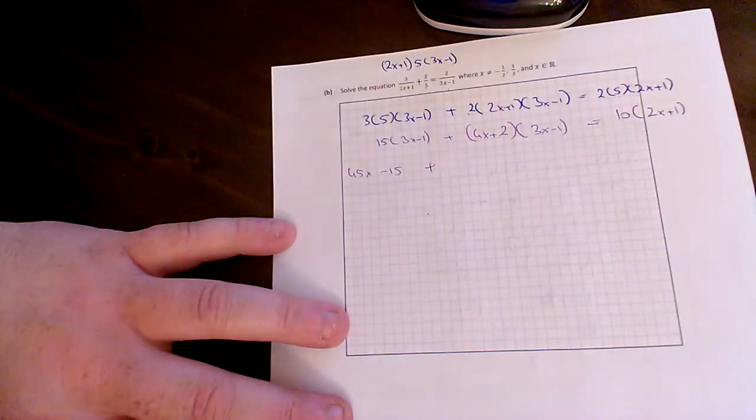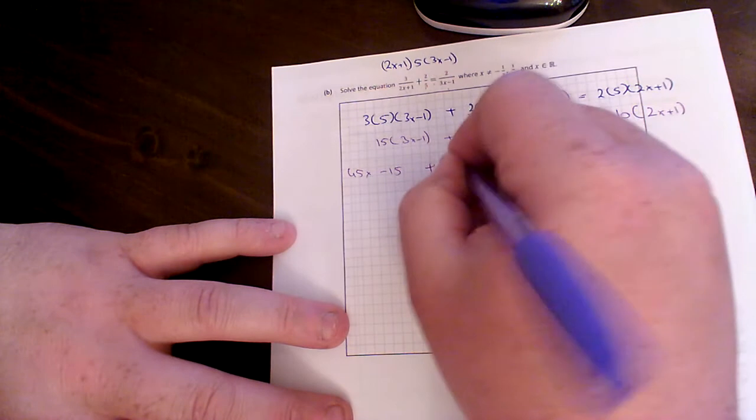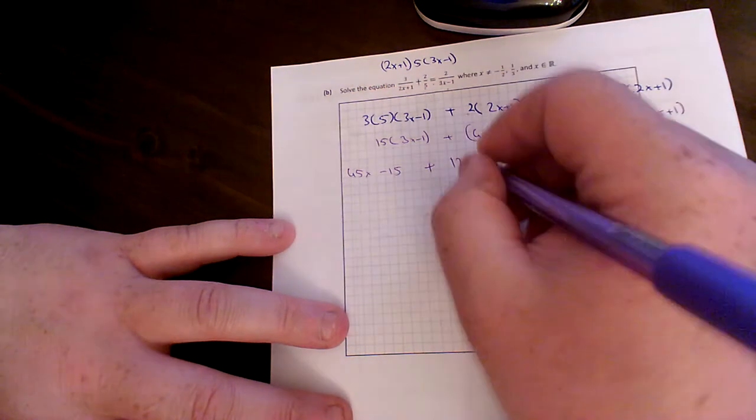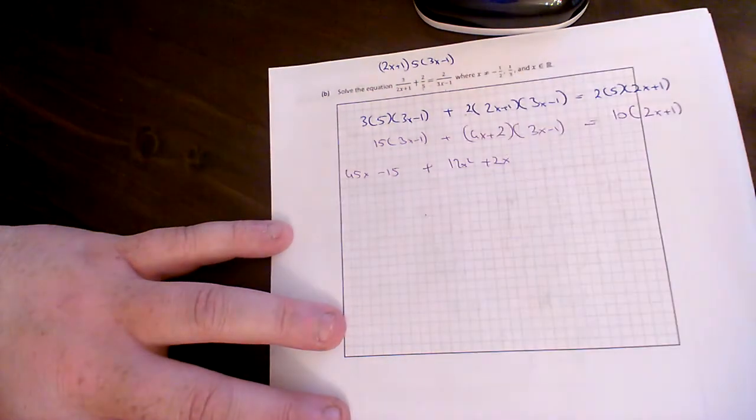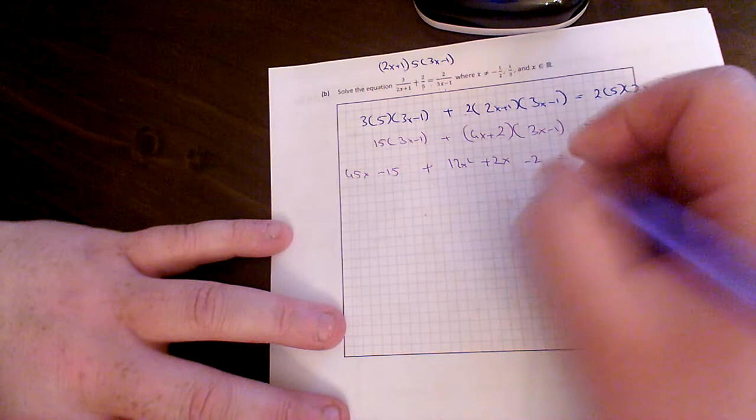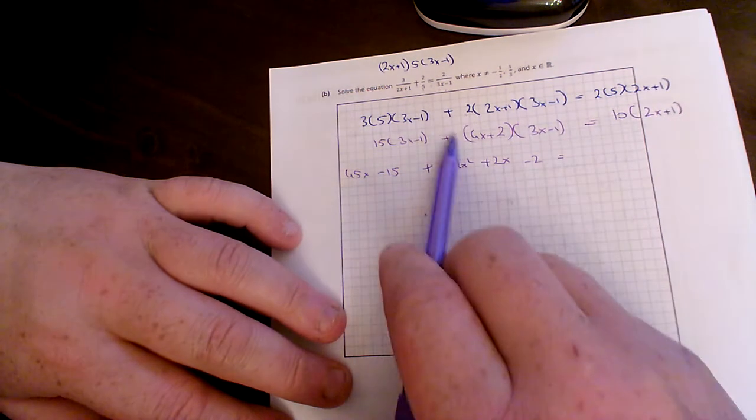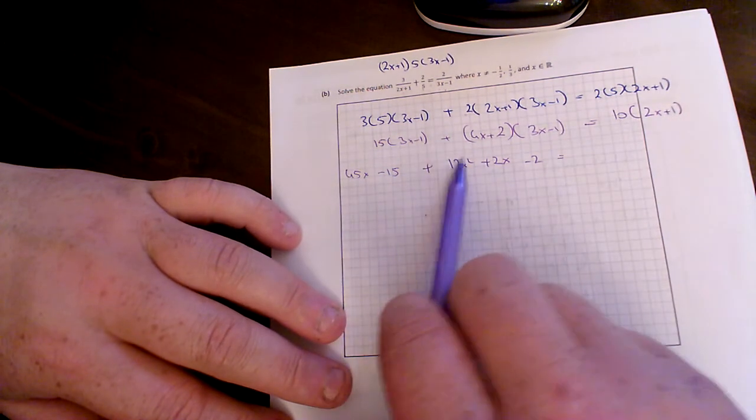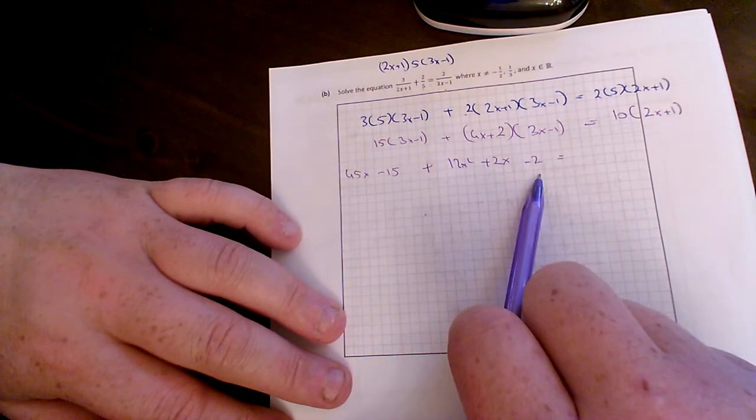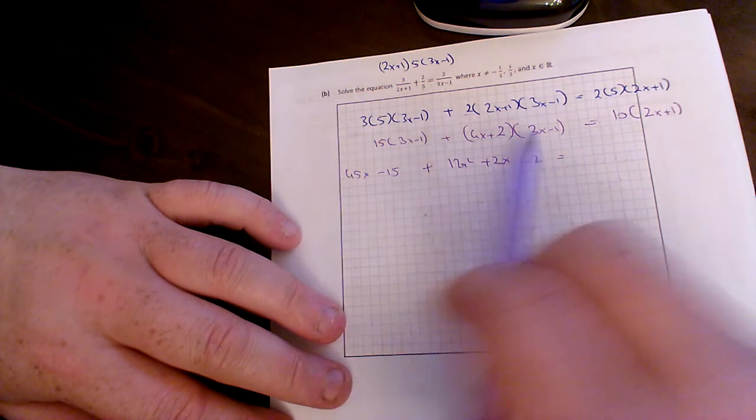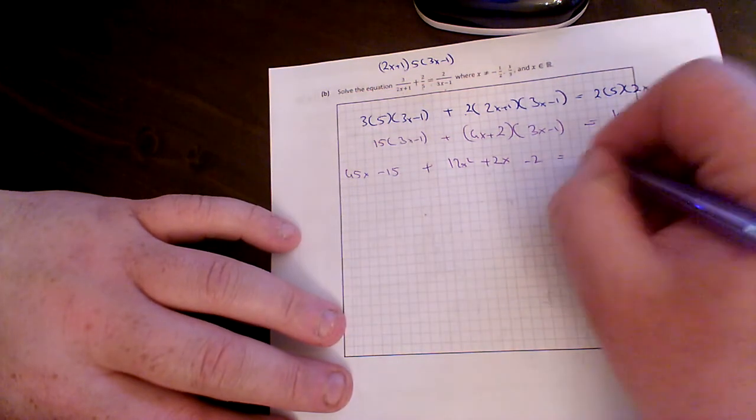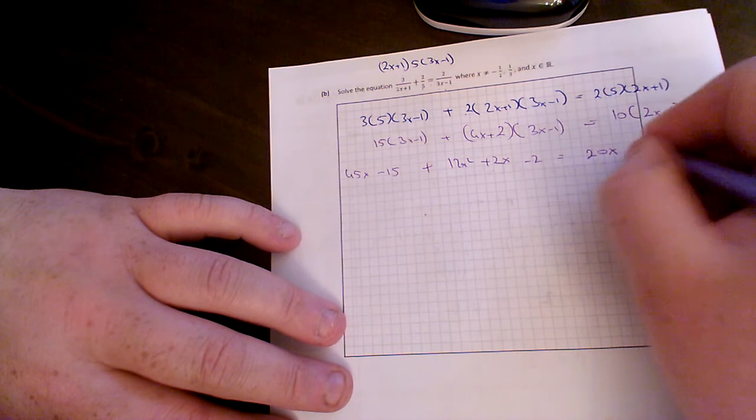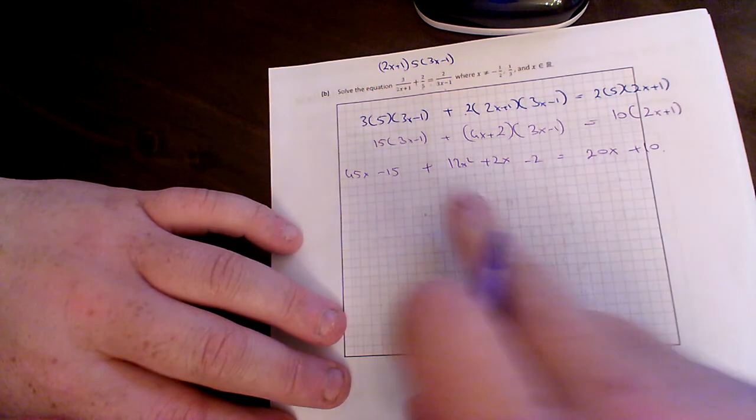Plus 12x squared plus 2x minus 2. Now the only place you can possibly make a mistake. If that was a minus, then it would be a minus and I'd put all this in brackets. But clearly it's not a minus. It's a plus. So you don't need to worry about your signs. 2 by 10 is 20x. And 10 by 1 is plus 10.